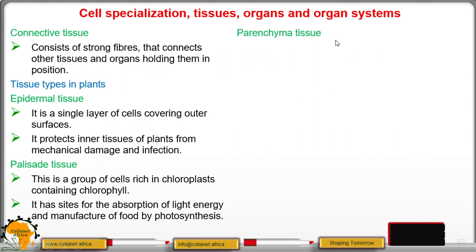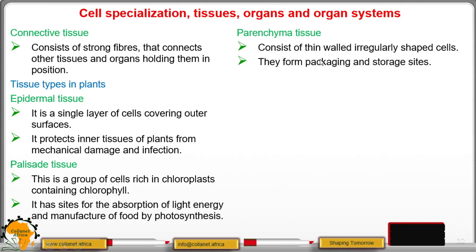We move to the parenchyma tissue and consists of thin-walled, irregularly shaped cells. They form packaging and storage sites.